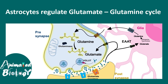Each stage of oligodendrocyte maturation can be distinguished by specific molecular markers. It's important to note that oligodendrocyte progenitors have self-renewal capacity. Both astrocytes and oligodendrocytes are generated from neuronal stem cells. The key is the external and internal signals that tell neuronal stem cells when to make neurons, when to make astrocytes, and when to make oligodendrocytes.